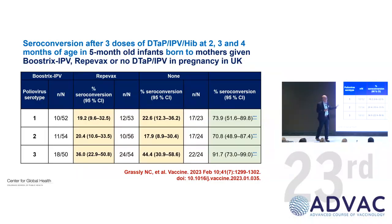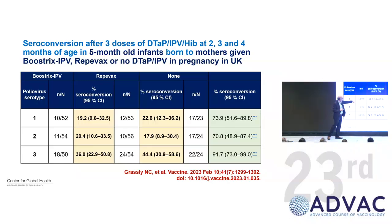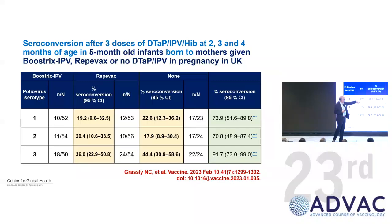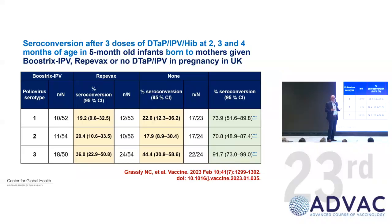Another important study involved mothers in the UK who got Boostrix IPV or Repevax — both IPV-containing. Children were then immunized with TDaP IPV. The seroconversion data shows that for children of vaccinated mothers, none of the poliovirus serotypes exceeded 45% seroconversion. When mothers received none of these vaccines, seroconversion was between 70 to 90%. So if you give IPV to the mother, she passes antibodies, and that baby is likely protected — but it will also interfere with the infant's vaccine response.